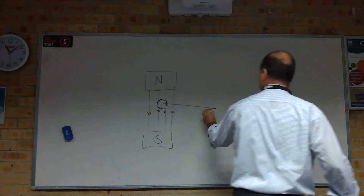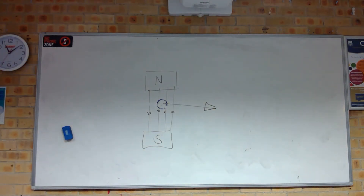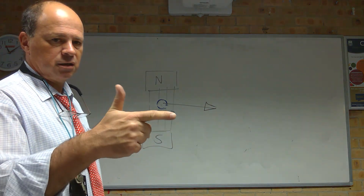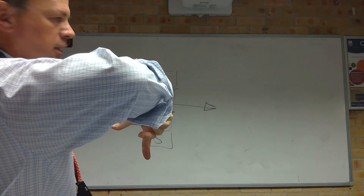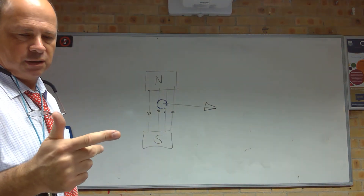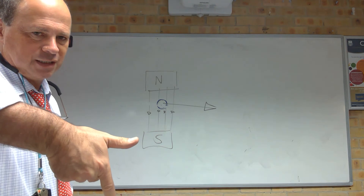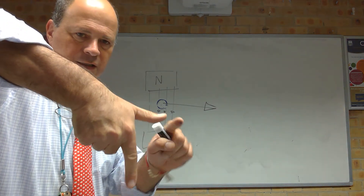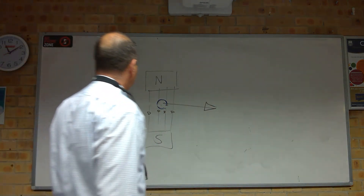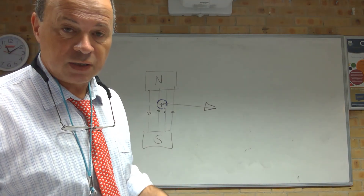Now let's move the conductor in the other direction — we should get the opposite answer, but pause the video and make sure you're happy with that. Right hand rule: flux going down, force going that way. Let's do it again — field down, force to the right, current into the board. Field down, force this way — you can't see this finger because it's pointing into the board, so this end will be plus.